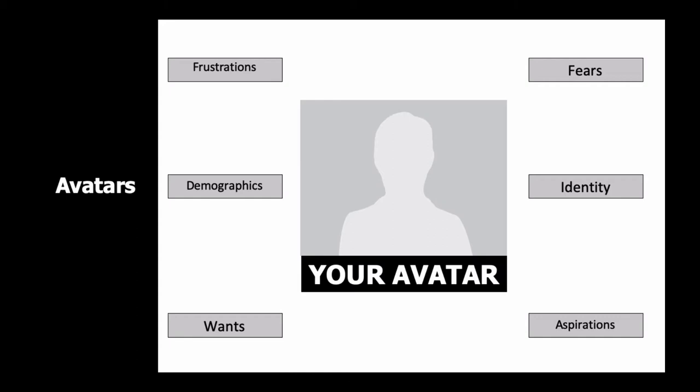Similarly, understand what they really want — from life and from their business. Come up with three or four wants. Then think about their aspirations — what do they aspire to? Once we've got this information, we can really start to target our marketing and get a clear handle on how we want to work with these clients, where we find them, and what makes them tick.